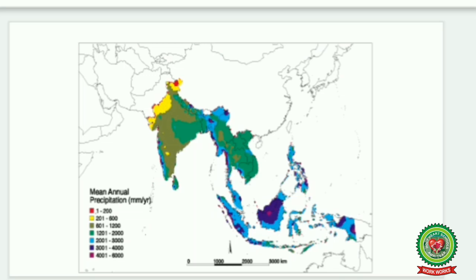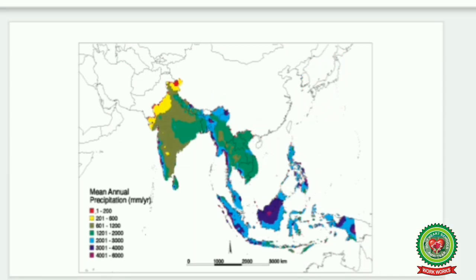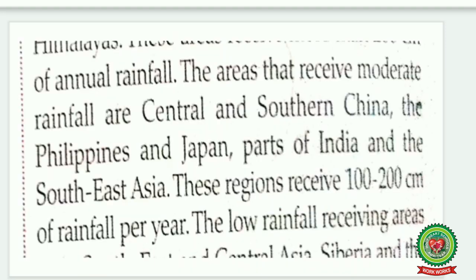Now the next region receives 100 to 200 centimeters of rainfall. These areas are Central and Southern China, the islands of the Philippines, Japan, and parts of India. The areas that receive moderate rainfall are Central and Southern China, the Philippines, Japan, parts of India, and Southeast Asia. These regions receive 100 to 200 centimeters of rainfall per year.